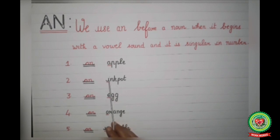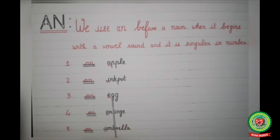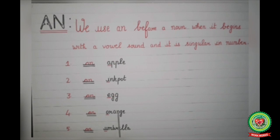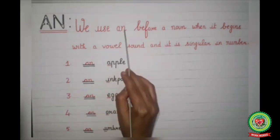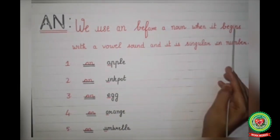Next example: 'an egg' — the word 'egg' starts with a vowel E, so we have written 'an egg'. Next example: 'an orange' — the word 'orange' starts with a vowel O, so we have written 'an orange'. Next example: 'an umbrella' — the word 'umbrella' starts with a vowel U, so we have written 'an umbrella'. To repeat: we use 'an' before a noun when it begins with a vowel sound and it is singular in number.